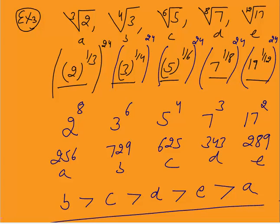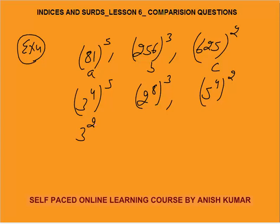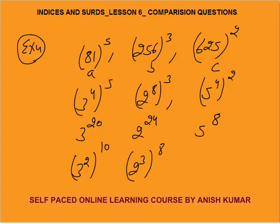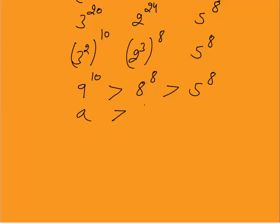The next question compares 81^5, 256^3, and 625. Express these as: 81^5 = (3^4)^5 = 3^20, 256^3 = (2^8)^3 = 2^24, and 625 = 5^4... which becomes 5^8. Rearranging: 3^20 = 9^10, 2^24 = 8^8, and 5^8. Since 9^10 has both a larger base and a larger power than 8^8, A is greater than B, and 8^8 is greater than 5^8, so B is greater than C.